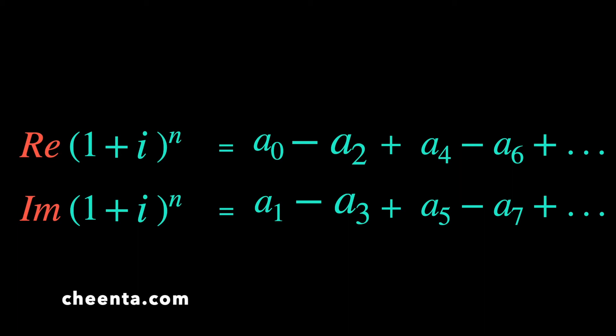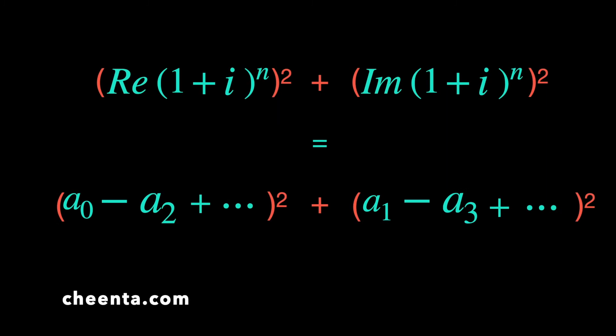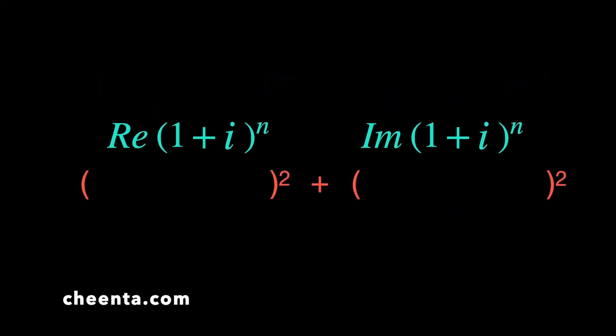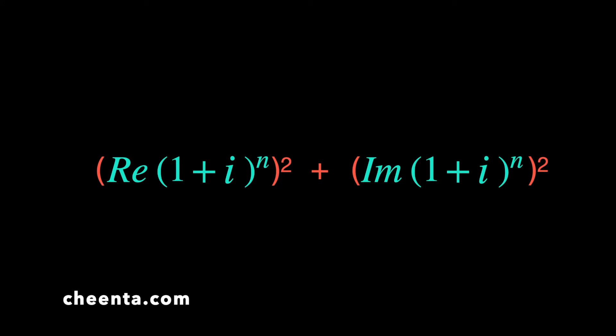We have differentiated the even indices and the odd indices — we are doing something right. Now, squaring both of these: (real part)² + (imaginary part)² is precisely (a₀ − a₂ + …)² + (a₁ − a₃ + …)², which is exactly what the problem asks. So the problem is indirectly telling us to find Re(1+i)ⁿ² + Im(1+i)ⁿ² in a roundabout way.